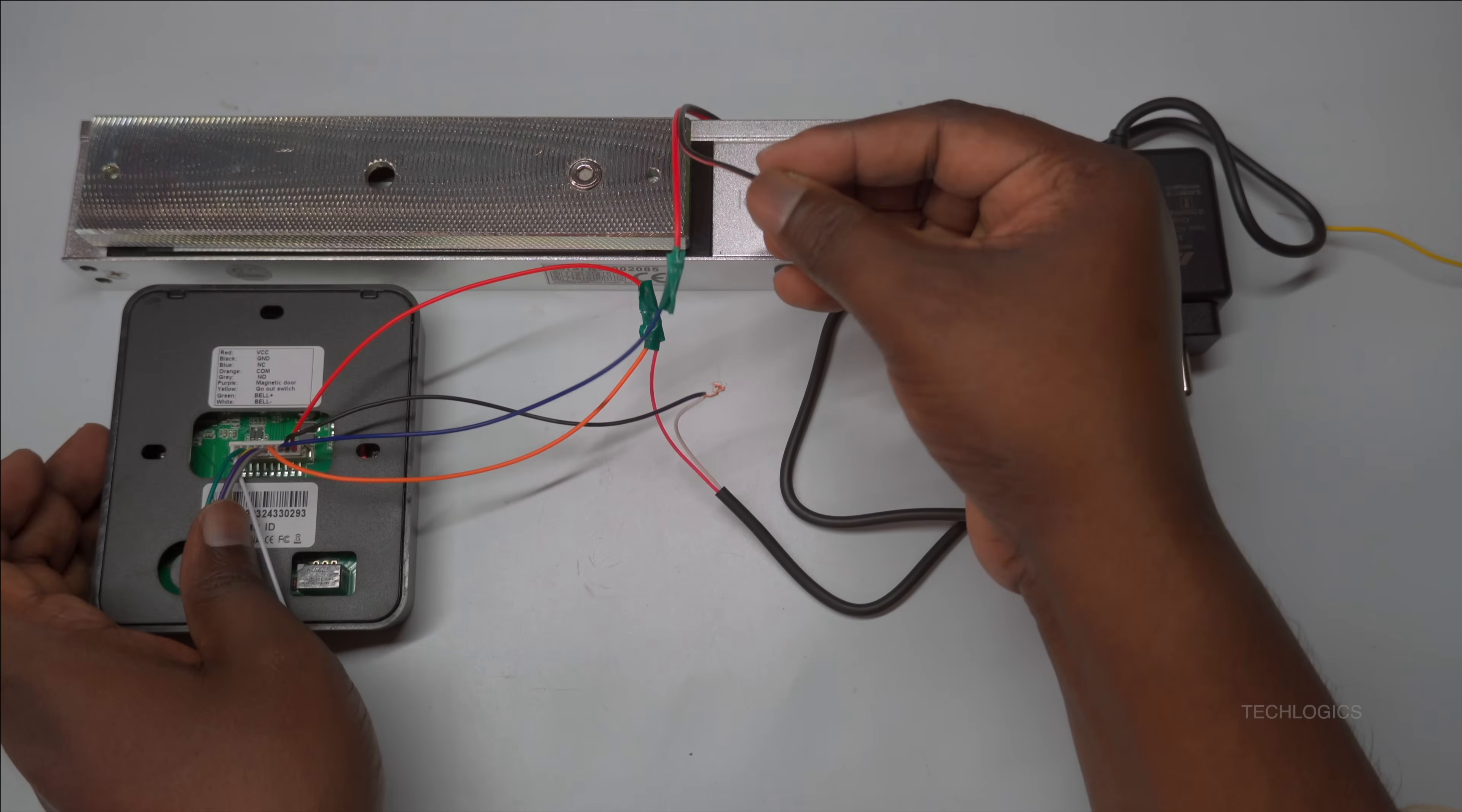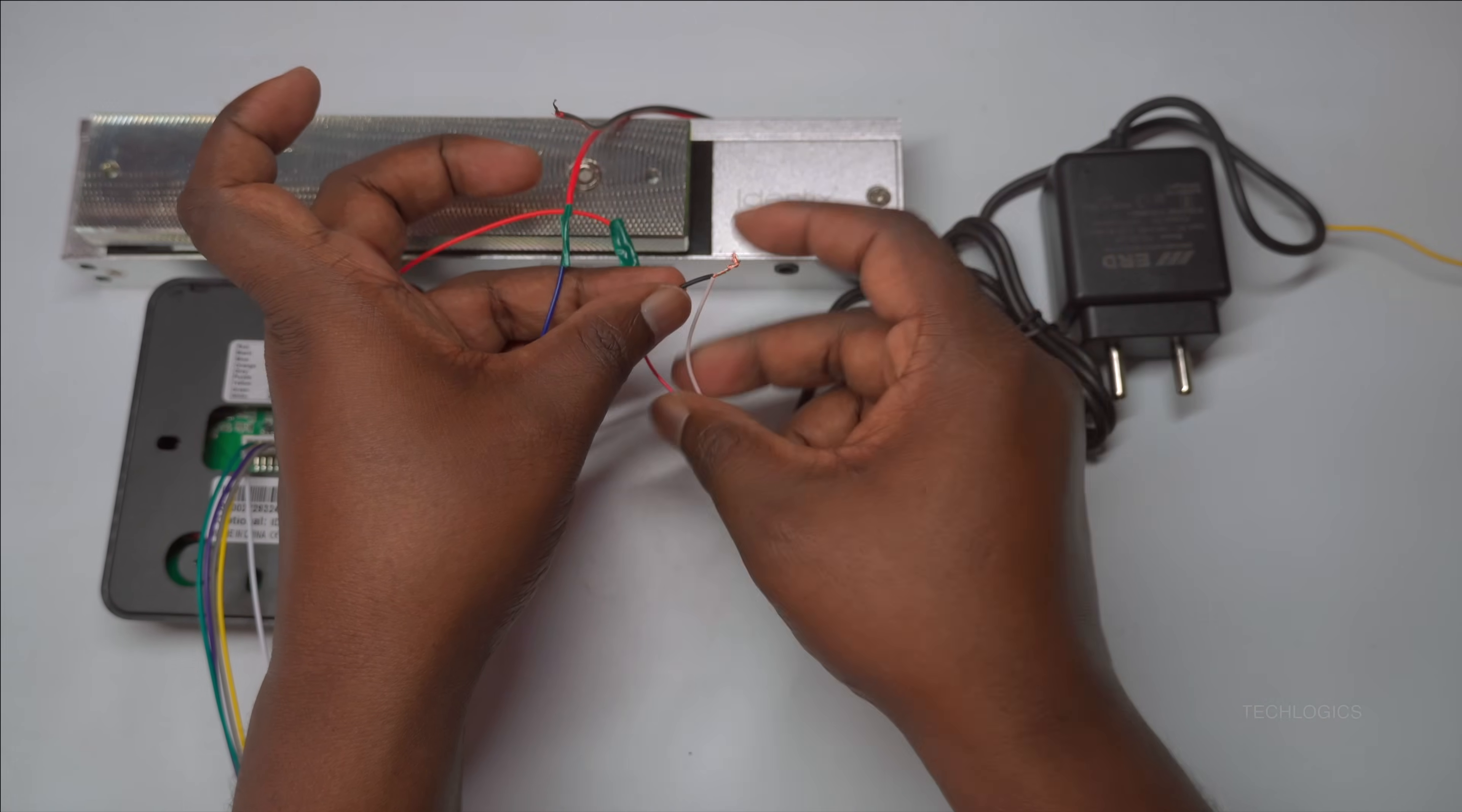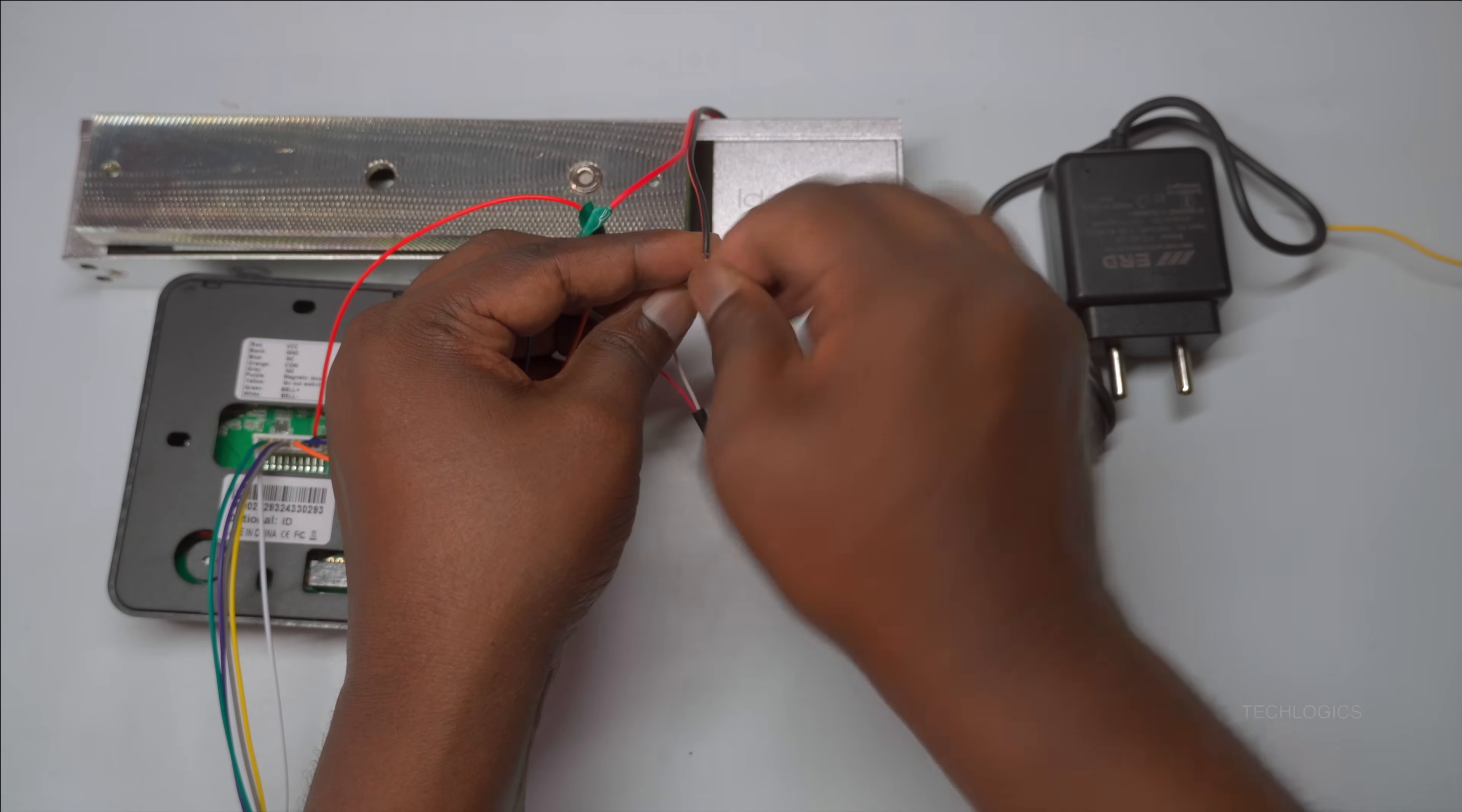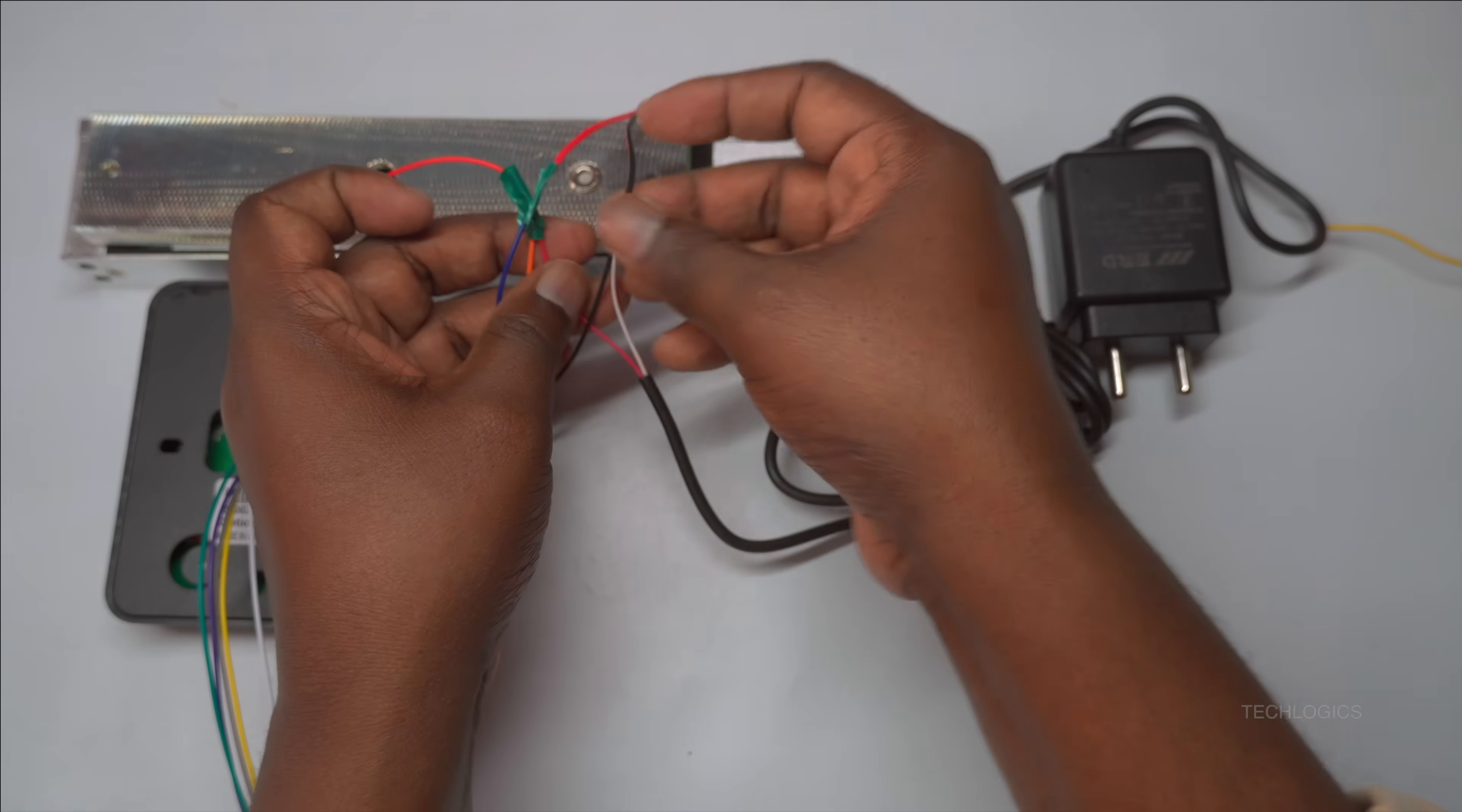Next, connect the negative terminal of the electromagnetic lock to the GND or negative wire of the DC power supply. This completes the power circuit for the electromagnetic lock, ensuring it receives the necessary ground connection to operate correctly. Make sure this connection is secure to ensure reliable locking and unlocking functionality.